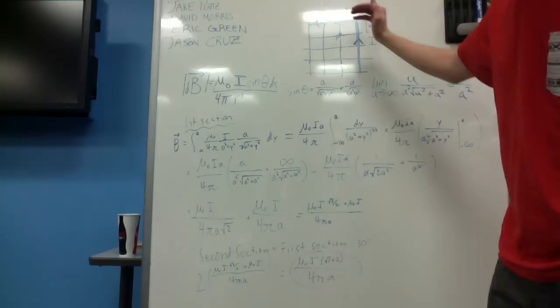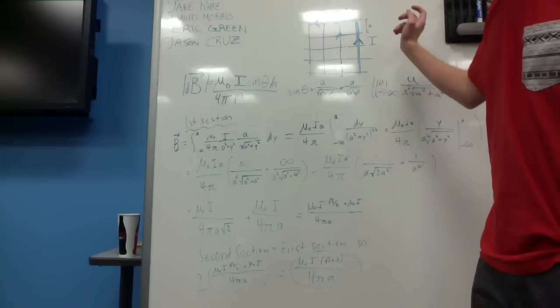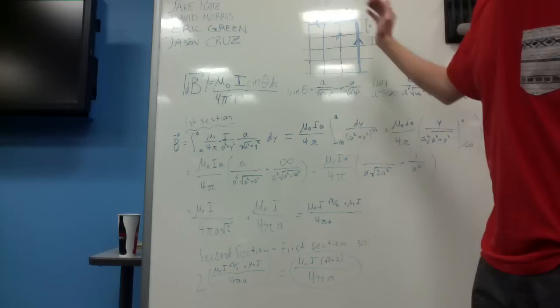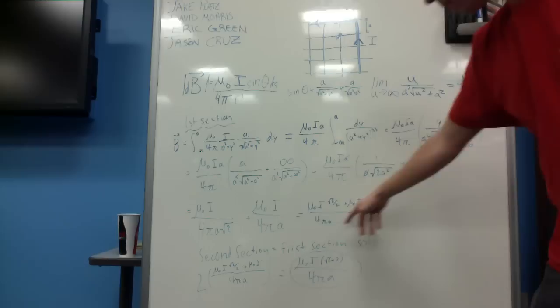And since it's basically going in the same direction, it's going clockwise around point P, we can determine that the magnitude of the magnetic field at point P is just this one and this one together. And since they're basically both in the same direction at the same points, it's going to be the same. So we just double what we have here,